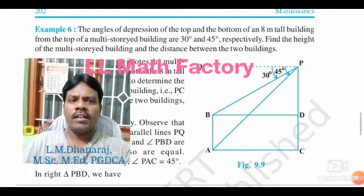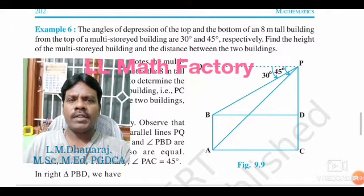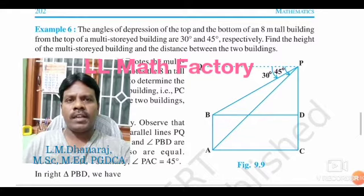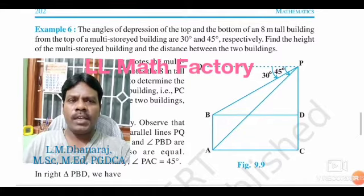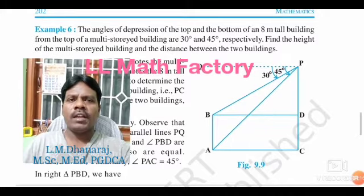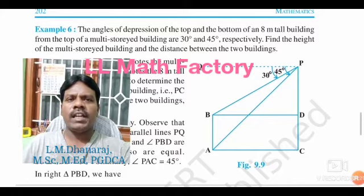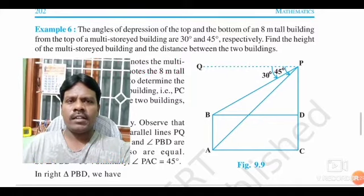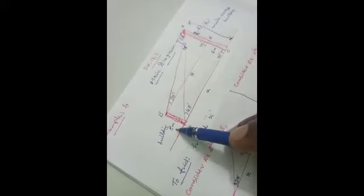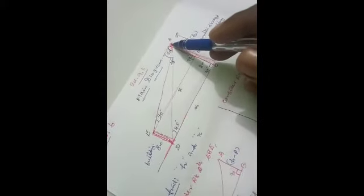The angle of depression is observed from the top of the multi-storied building, that is point P. The point of observation is from P. The first angle is 30 degrees and the other is 45 degrees. This is the smallest building with height 8 meters, and this is the multi-storied building whose height we need to find.